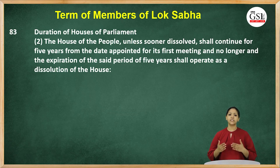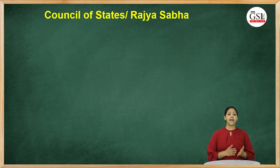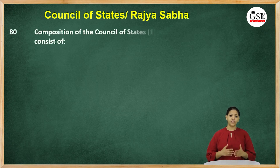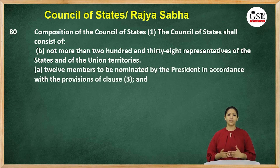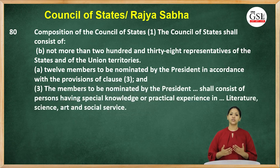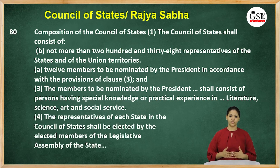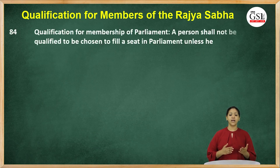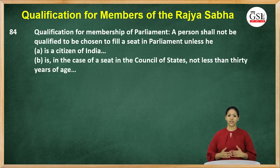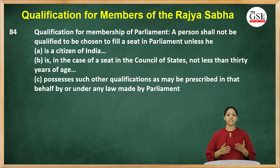Rajya Sabha is the upper house of the Parliament. The maximum strength of the Rajya Sabha has been fixed at 250 members; of these, 238 are elected representatives of the states and Union territories, and 12 members are nominated by the president from the fields of literature, science, art, and social services. The seats are allotted among the various states and Union territories on the basis of population, and the representatives of a state in the Rajya Sabha are elected by the elected members of the state legislative assembly.